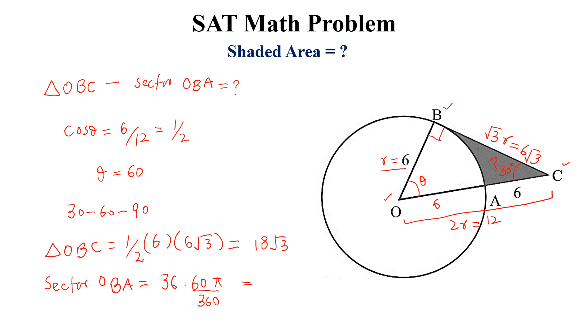This will be equal to 6π. So the required shaded area is equal to 18√3 minus 6π. We take 6 common and get 6(3√3 - π). So this is the required shaded area.